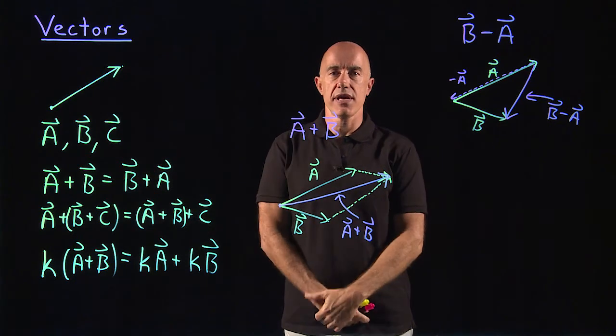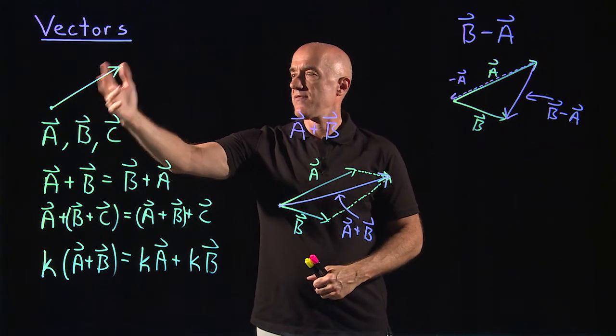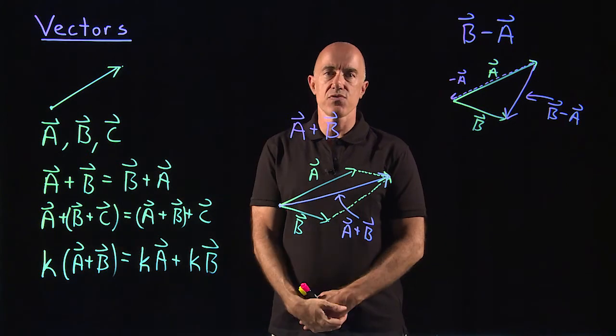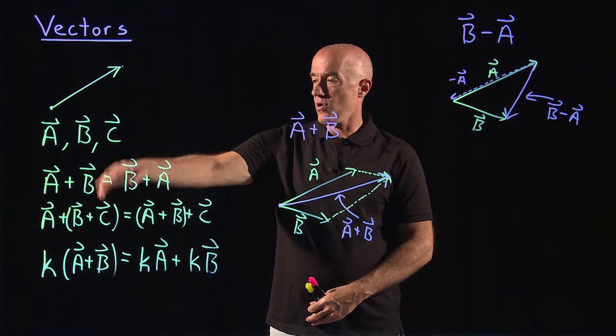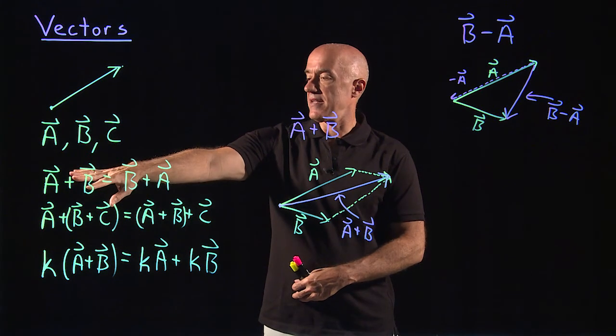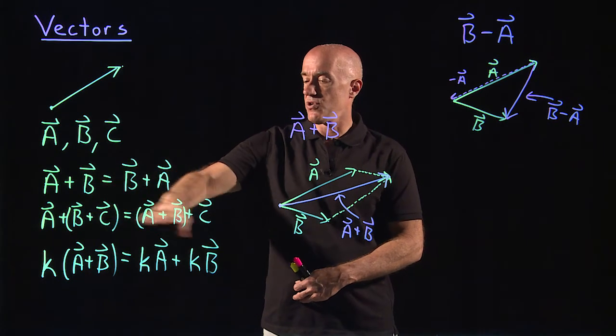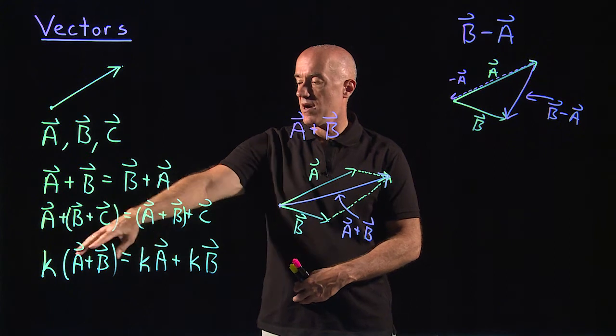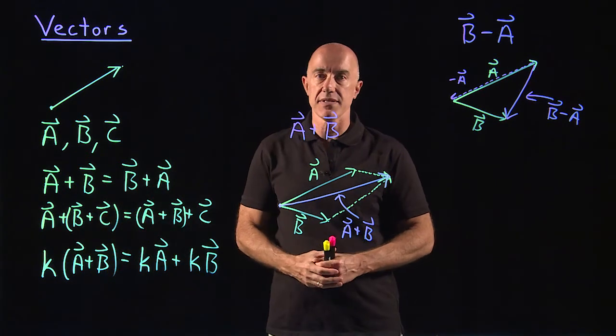So I'm showing you here that vectors are these objects that have a length and a direction. They satisfy the usual rules of algebra or arithmetic in that it's commutative, a plus b is b plus a, it's associative over addition, and it's distributive with k as scalar. So k(a plus b) is k a plus k b.